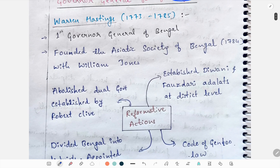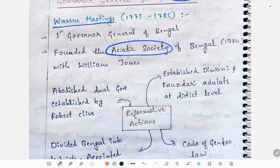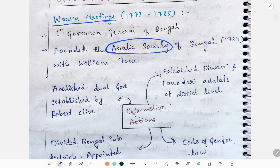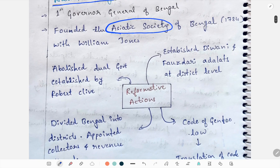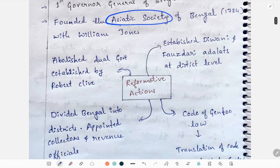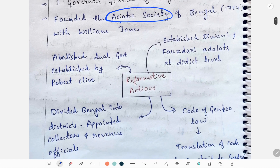The first Governor General of Bengal was Warren Hastings. He administered from 1773 to 1785. He was the first Governor General of Bengal and he founded the Asiatic Society of Bengal with William Jones. His reformative actions were he established the Diwani and Faujdari Adalats at the district level.